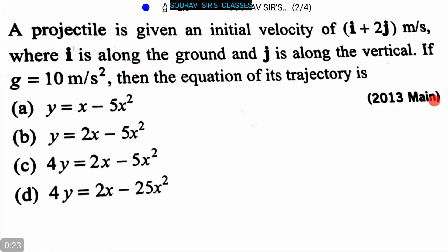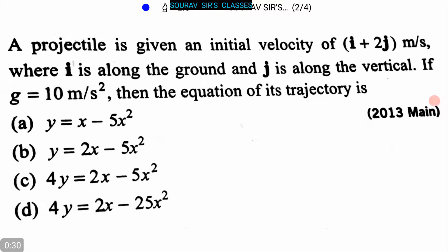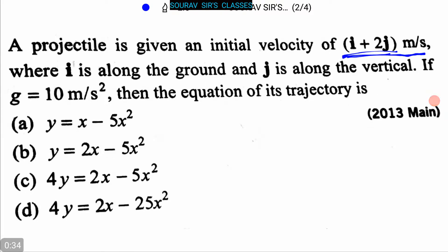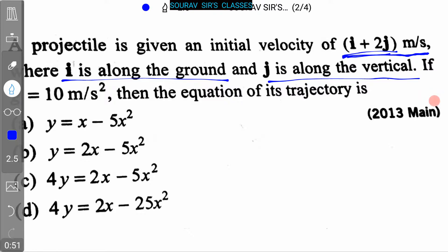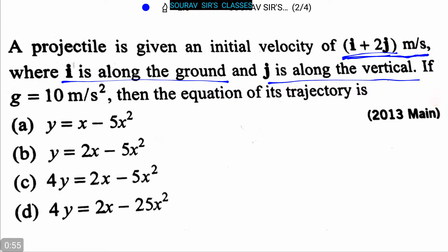Today we are solving some questions on kinematics. The first question is: a projectile is given an initial velocity of i plus 2j meter per second, where i is along the ground and j is along the vertical. If g is equal to 10 meter per second square, then the equation of its trajectory is — option A: y = x − 5x², option B: y = 2x − 5x², option C: 4y = 2x − 5x², option D: 4y = 2x − 25x².